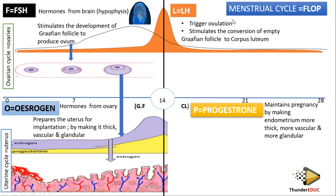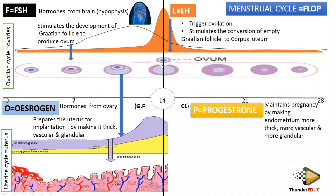On day 14, luteinizing hormone increases to its peak — it triggers ovulation. The graafian follicle is going to burst open and release the ovum. The ovum has been released on day 14. The empty graafian follicle remains. Now the luteinizing hormone is going to stimulate the conversion of this empty graafian follicle to corpus luteum.